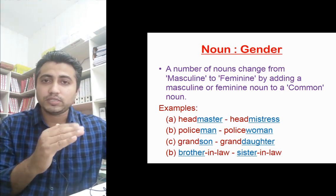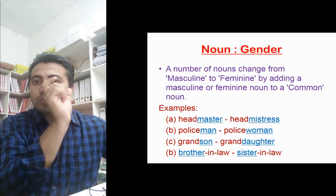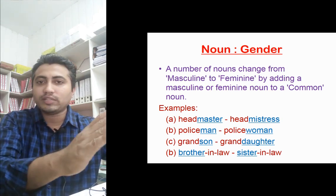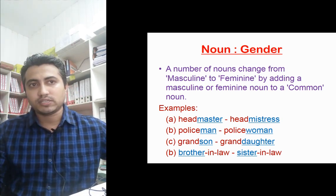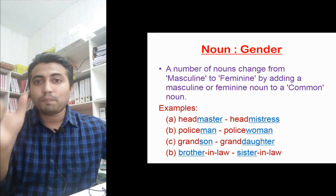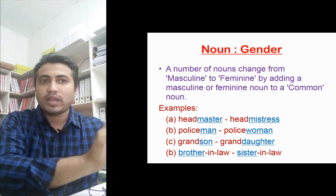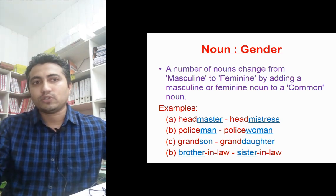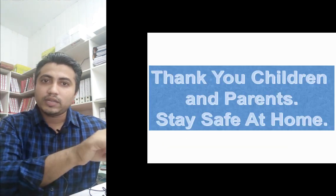The last type of change is where a common word remains constant and only part of the word changes. For example, headmaster — 'head' remains common, 'master' changes to 'mistress', giving headmistress. Policeman — 'police' is common, 'man' changes to 'woman', giving policewoman. Grandson — 'grand' is common, 'son' changes to 'daughter', giving granddaughter. Brother-in-law — 'in-law' remains common, 'brother' changes to 'sister', giving sister-in-law.